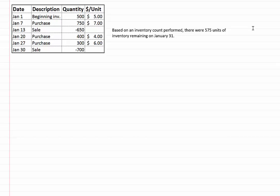We've written here based on an inventory count performed there were 575 units of inventory remaining on January 31st and I'm just making a note at the top here we are under the periodic system and we're using the weighted average method.